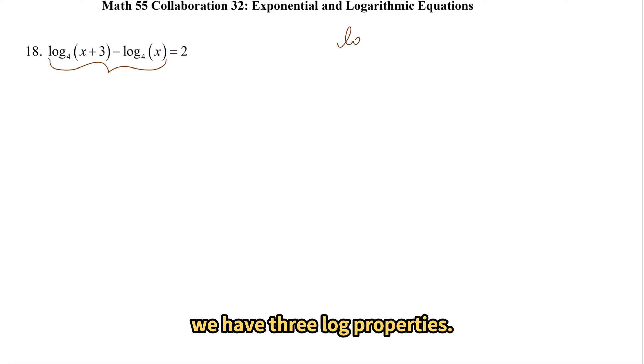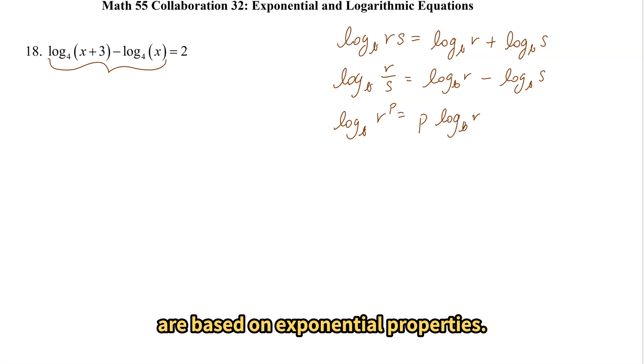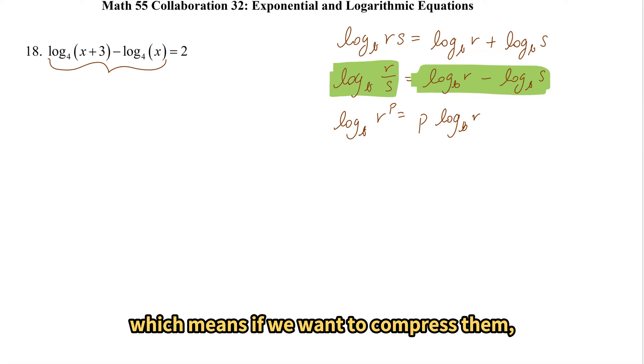We have three log properties. All three of these log properties are based on exponential properties. And we've discussed these properties before. The one that I want to call out is the second one. Notice we have a subtraction of logs, which means if we want to compress them, we need to divide their arguments.